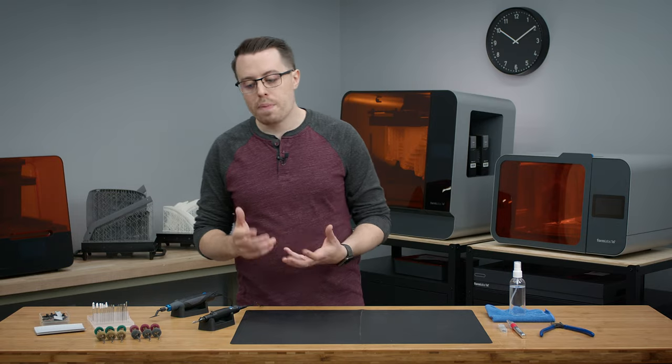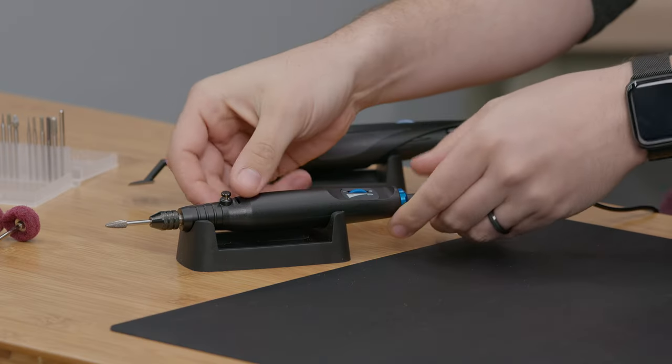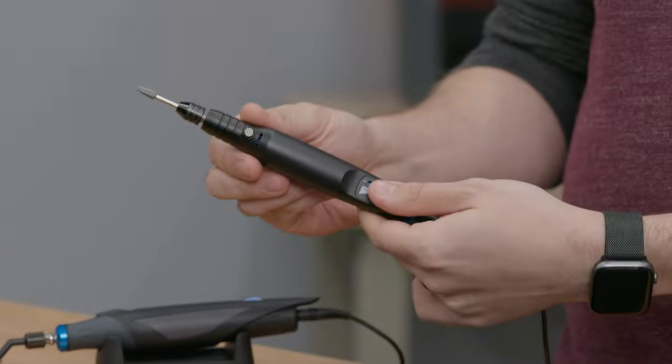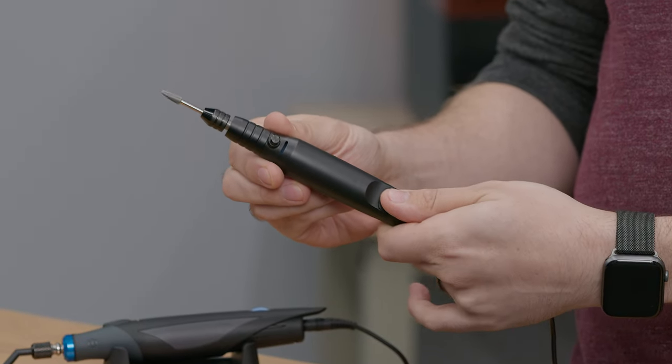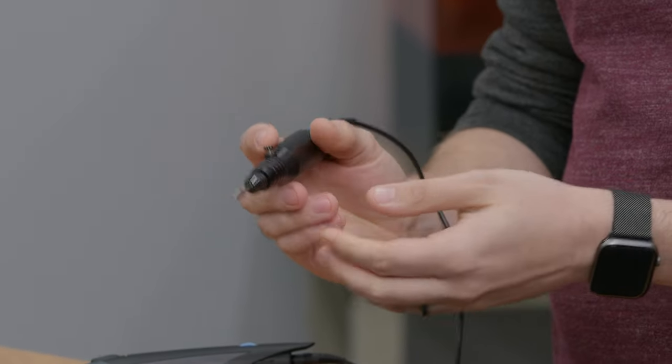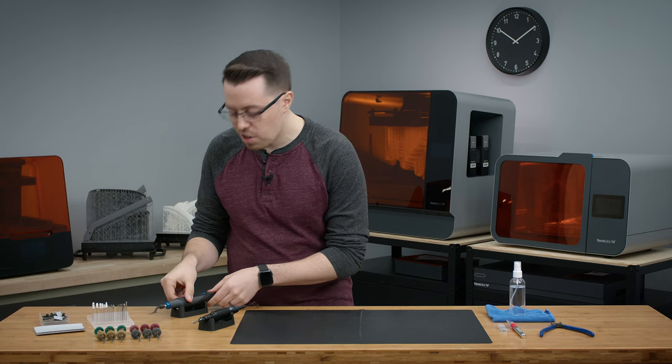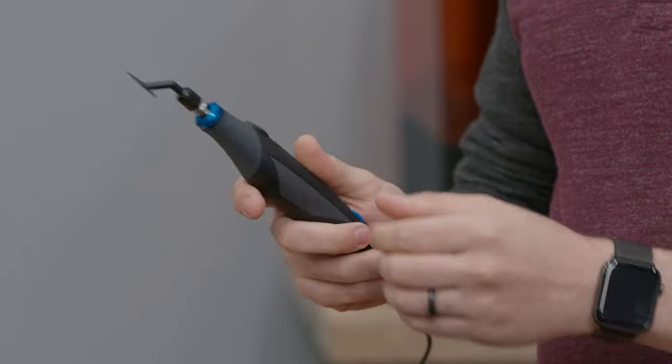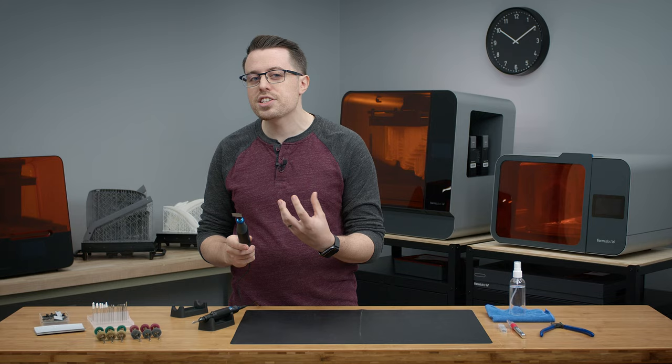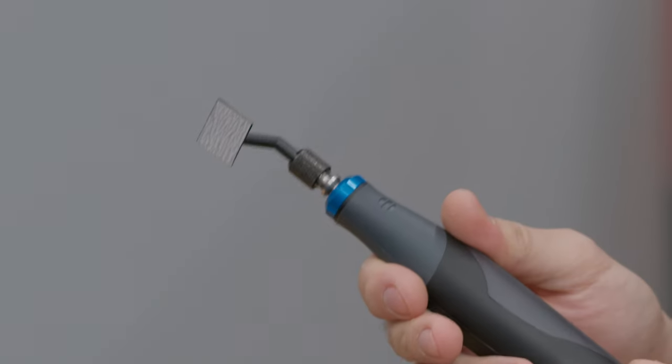The kit is built around two powered tools primarily. The first being an adjustable speed rotary tool that would allow for easy support removal and to get you a nice smooth surface finish. Our second powered tool is an ergonomic pen sander that will allow you to polish and sand large, flat, or gently curved surfaces much more easily.